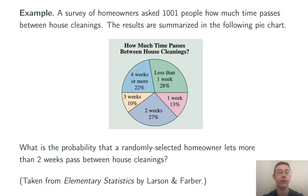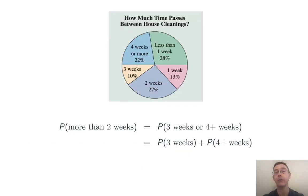Here's another example. This one's taken from Elementary Statistics by Larson and Farber. A survey of homeowners asked a thousand and one people how much time passes between house cleanings. The results are summarized in this pie chart. We have less than one week, one week, two, three, and more than four weeks. What's the probability that a randomly selected homeowner lets more than two weeks pass between house cleanings?